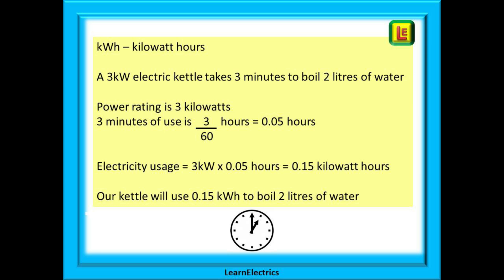How many kilowatt hours are consumed by everyday appliances? Let's say we have a 3 kilowatt electric kettle that takes 3 minutes to boil 2 litres of water. The power rating is 3 kilowatts. 3 minutes converted into hours is 3 divided by 60, which is 0.05 hours. So our electricity usage will be 3 kilowatts times 0.05 hours, which equals 0.15 kilowatt hours. That is what we will be charged for — 0.15 kilowatt hours.